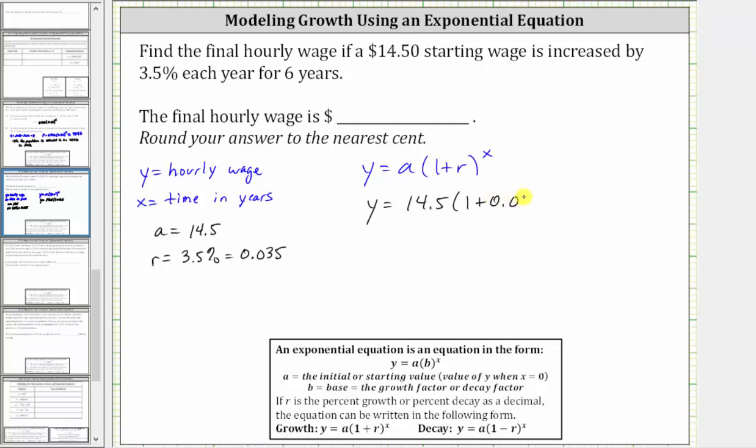Raised to the power of x. Simplifying, we have y equals 14.5 times 1.035 raised to the power of x.